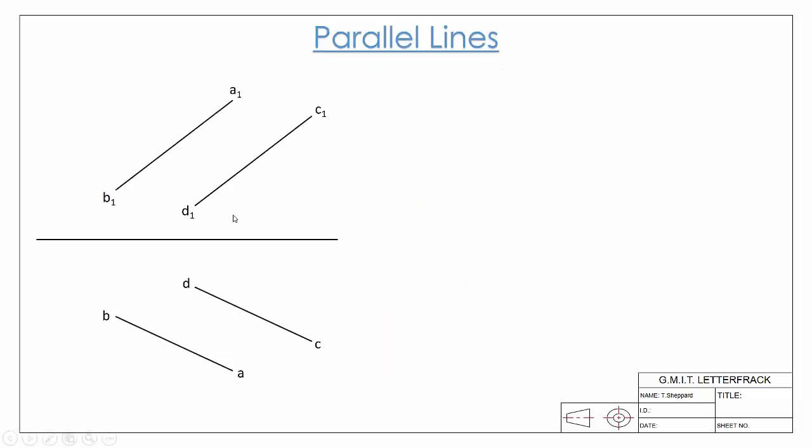The first type of line we're going to deal with are parallel lines. Parallel lines are lines that have the same direction - doesn't necessarily have to have the same length, but they have to have the same angle or direction. A nice simple example would be the sides of a ladder.